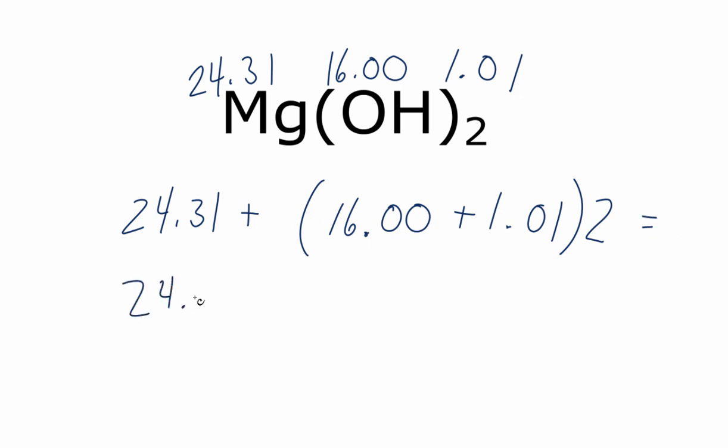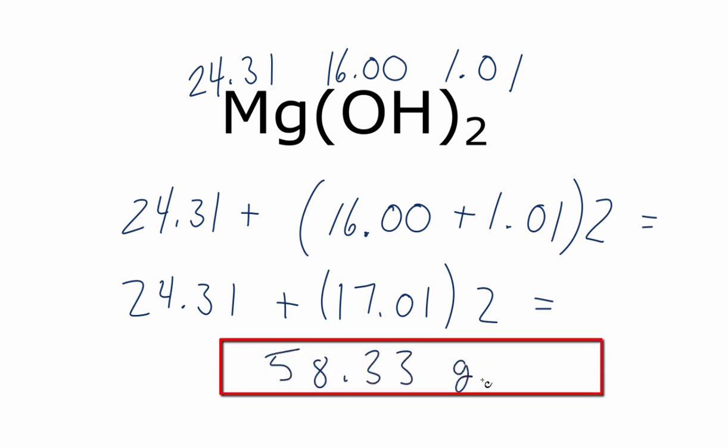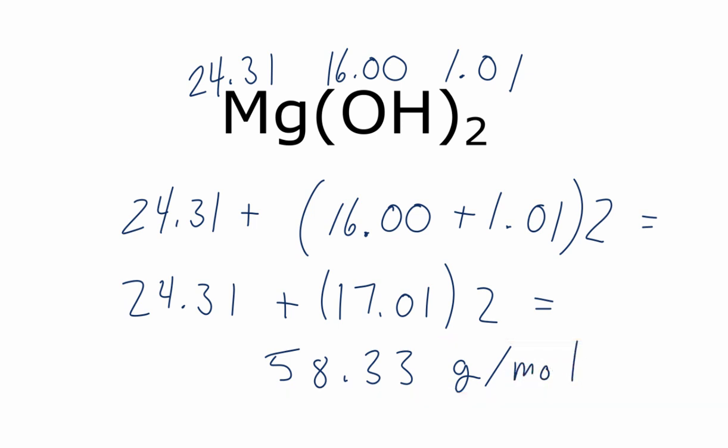When I do that, I end up with 24.31 plus 17.01, which I'll then multiply by 2, and when I add those up, multiplying first, I end up with 58.33 grams per mole for the molar mass of Mg(OH)₂ magnesium hydroxide.